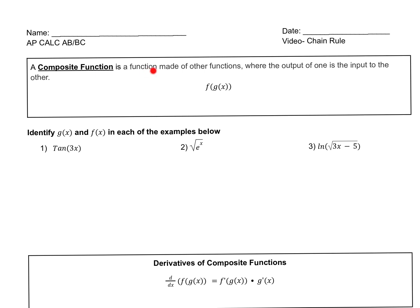A composite function is a function made of other functions where the output of one is the input of the other. So normally you would have f of x, but here we have f of g of x. g of x is a y value — that's your output — which becomes the input of f. You probably understand this from pre-calc: whatever's inside the parentheses you do first, and then you apply f to it.